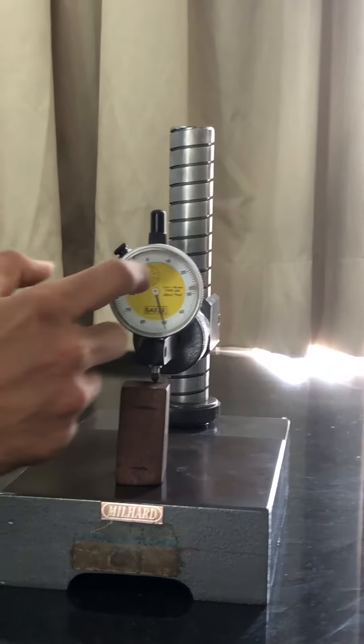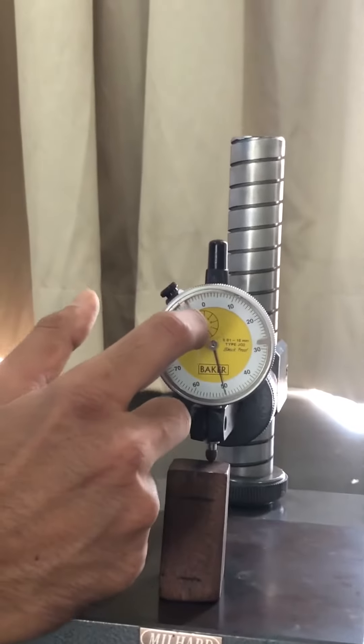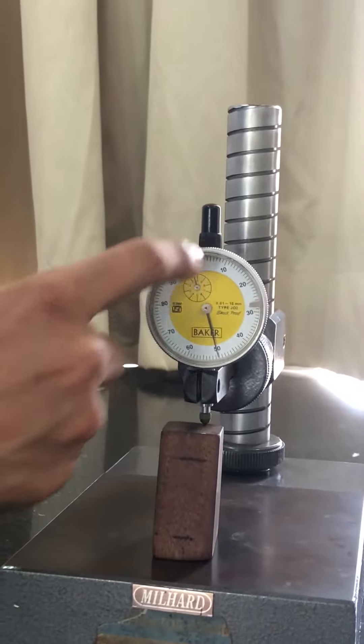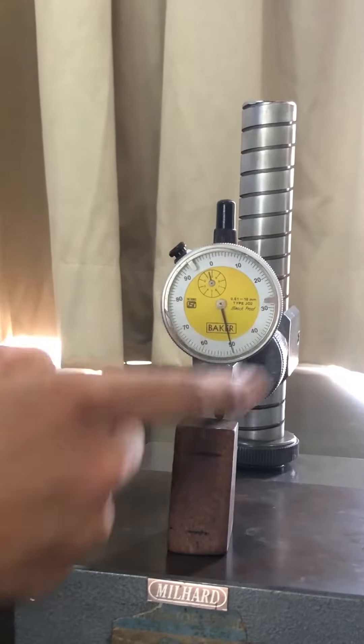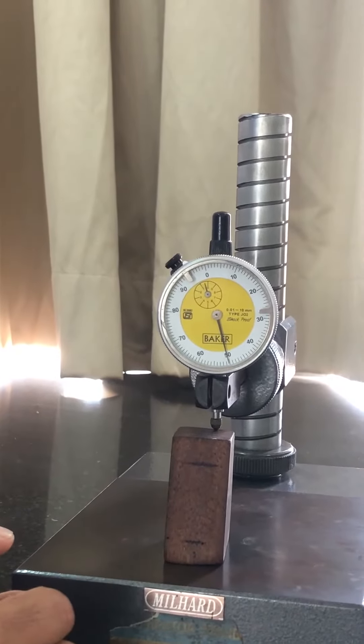It has a main scale at the center and a circular scale which is the secondary main scale division.